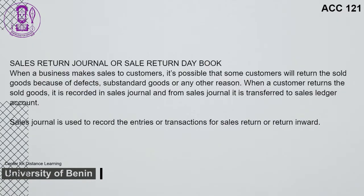When a business makes sales to customers, it is possible that some customers will return the sold goods because of defects, substandard goods, or any other reason. When a customer returns sold goods, it is recorded in the sales journal, and from the sales journal, it is transferred to the sales ledger account. A sales journal is used to record entries or transactions for sales returns or return inward.